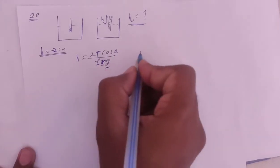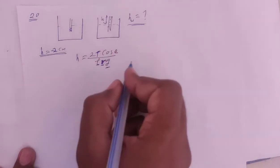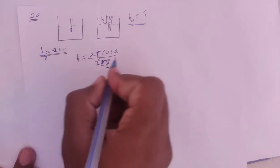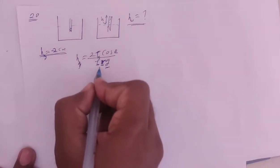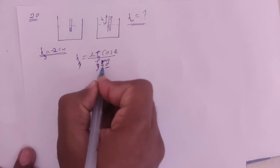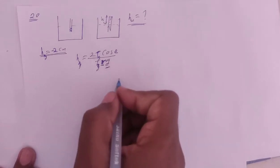We need to do this for both mercury and water. For mercury, we're given height equals minus 2 cm. So the formula: h_mercury equals 2 times surface tension of mercury times cos theta_mercury divided by density of mercury times r times g.